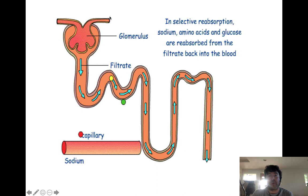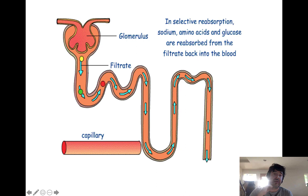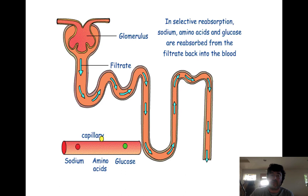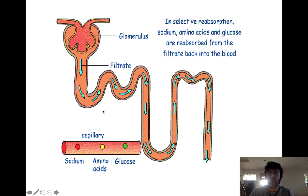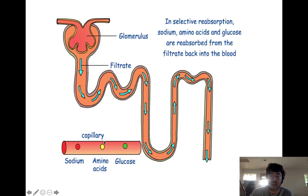Here we have the afferent arteriole, the efferent arteriole, and the capillary network of the glomerulus. What gets pushed across is water and small water-soluble solutes. The small water-soluble solutes the body needs — like electrolytes, glucose, and amino acids — get reabsorbed from the filtrate back into the bloodstream because we need them. You would effectively urinate yourself to death in about 17 minutes if we didn't reabsorb the overwhelming majority of what was produced as filtrate. Reabsorption is the movement of substances from the filtrate back into the blood.